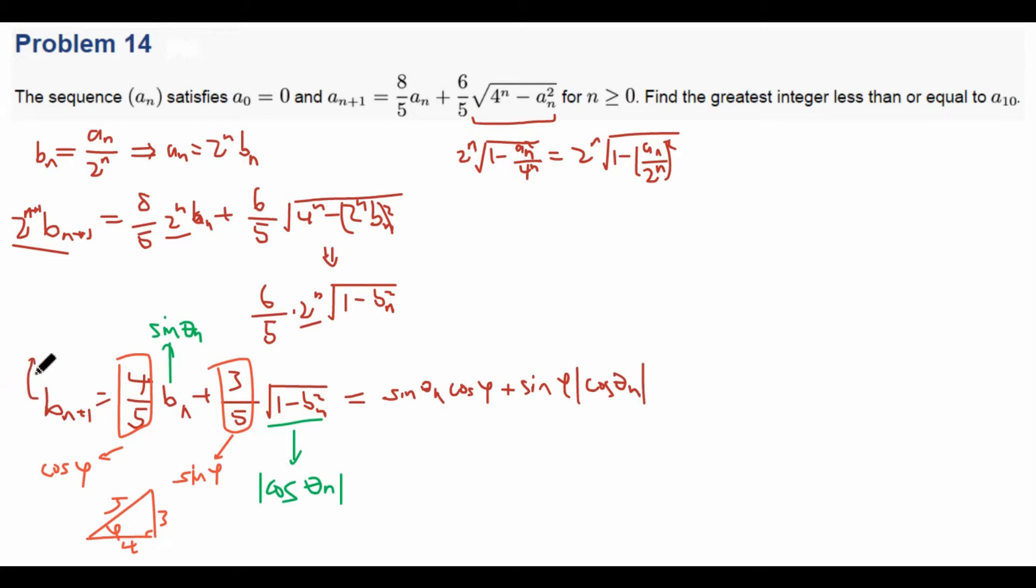Alright, so that means that this entire expression just evaluates to sine of theta_n cosine of phi plus sine of phi times the absolute value of cosine of theta_n. And we know that B_{n+1} is just sine of theta_{n+1}. Okay, so now we have yet another recursion, and this time in terms of theta, or theta_1, theta_2, theta_3, and we want to find theta_10 I guess.